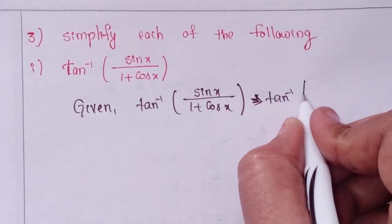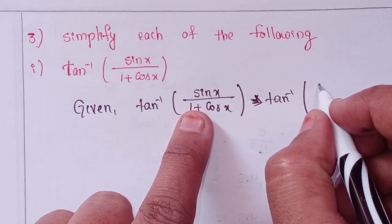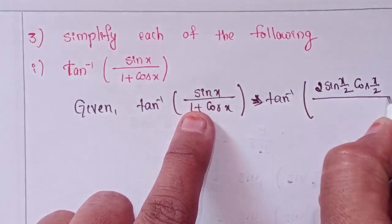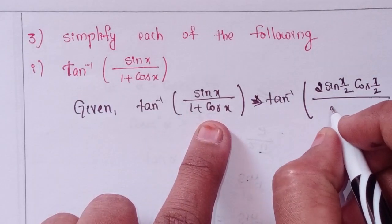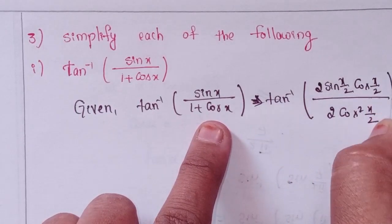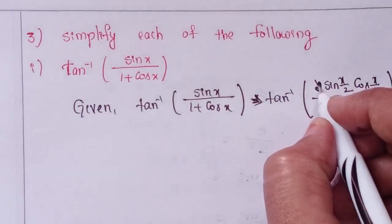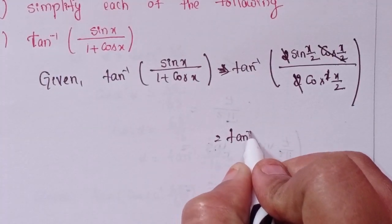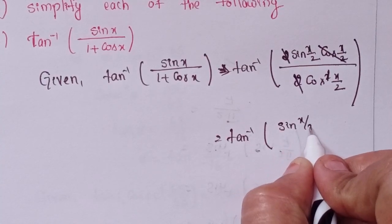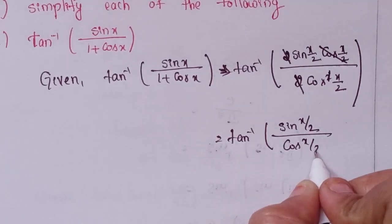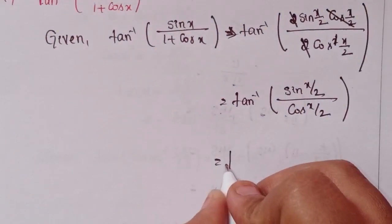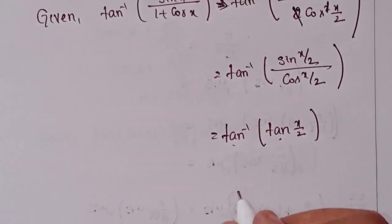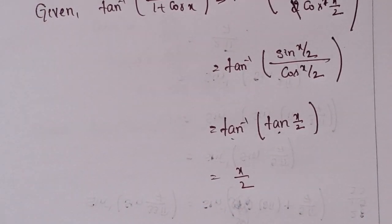Tan inverse of sin x — can I write 2 sin(x/2) times cos(x/2) — and 1 plus cos x in terms of cos means 2 cos²(x/2). The 2 and cos(x/2) cancel, giving tan inverse of sin(x/2) divided by cos(x/2). Since sin over cos is tan, this becomes tan inverse of tan(x/2). These two cancel, so x/2 is the solution.